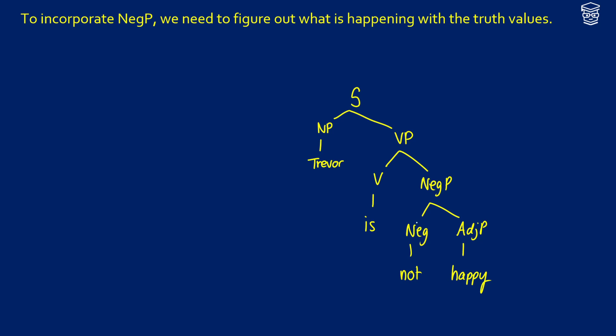Let's think about what not is before we even think about the tree. If we have something like happy, we might say this is something like lambda x.x is happy. And we might translate this in predicate logic as something like happy of x. Now when we think of something like not happy, what would we get here?